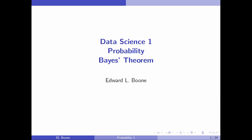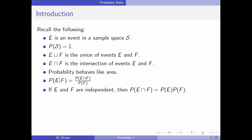Welcome to Data Science 1, Probability, Bayes Theorem. We have all of these rules that we've been accumulating along the way about an event, a sample space, the probability of sample space equals one, unions, intersection, probability behaves like area, we have a conditional probability, and we have this idea of independence.